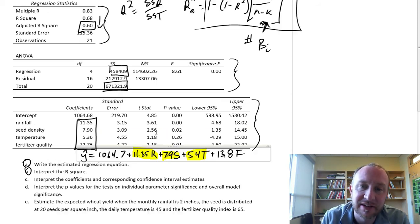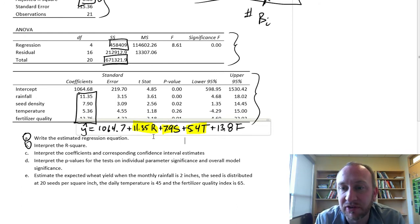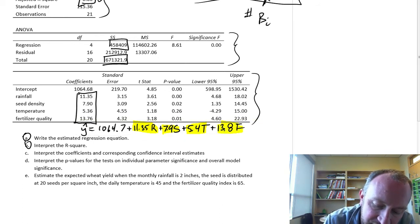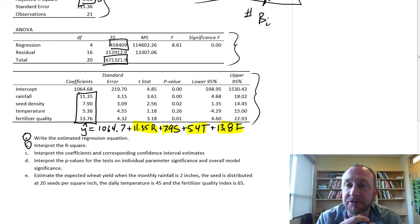And on the fertilizer, this is measured as an index. I don't know how this index is calculated, but for each additional unit increase of the fertilizer index, that contributes 13.8 pounds on average to wheat yield.